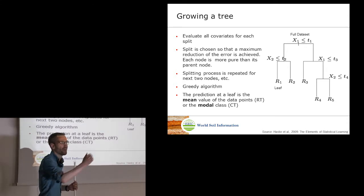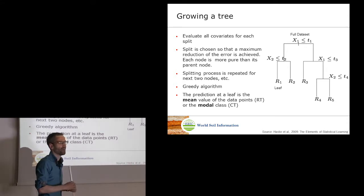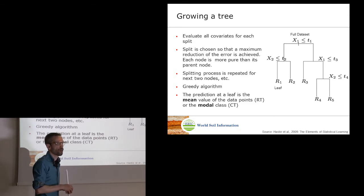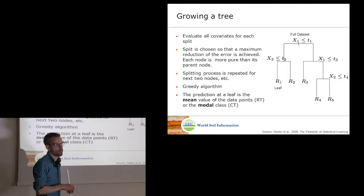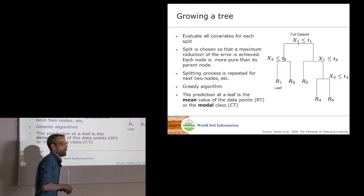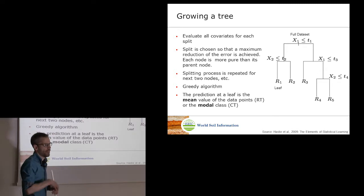A student asked whether you can specify the decision criterion yourself. The answer is that the algorithm uses a squared error or mean squared error statistic and handles this internally — you cannot easily change that criterion.